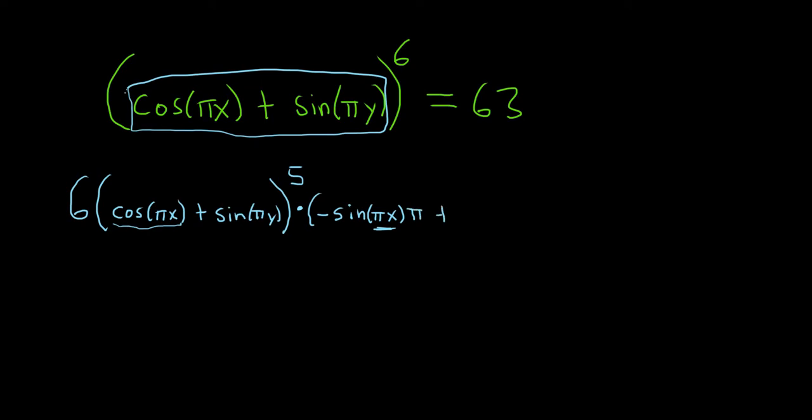And plus, the derivative of sine is cosine, so we get cosine πy times the derivative of the inside. So the π hangs out, and the derivative of y is simply dy/dx. This is in parentheses, and this is all equal to 0, because the derivative of 63 is 0.